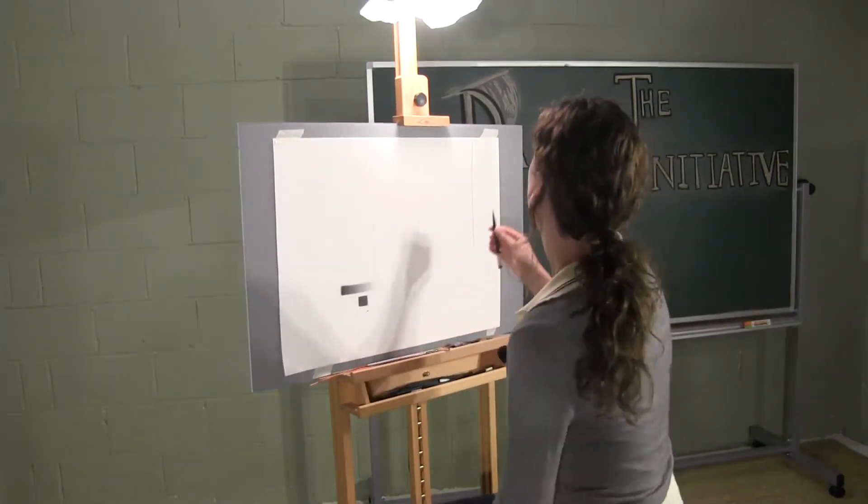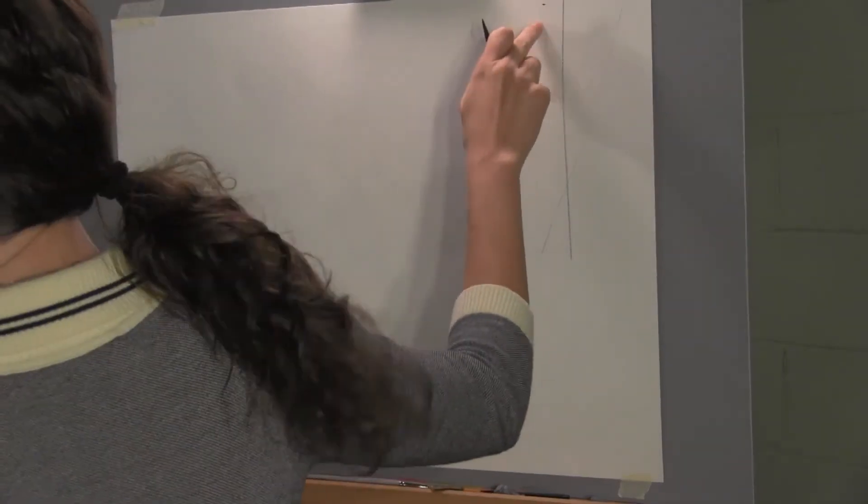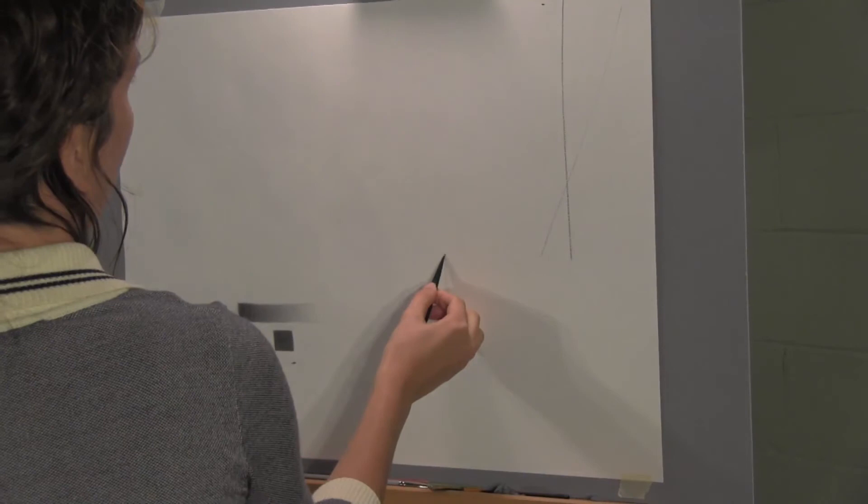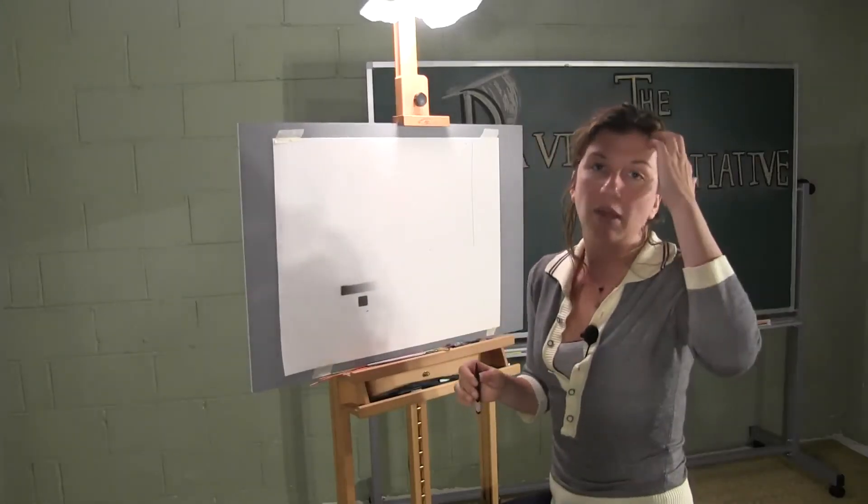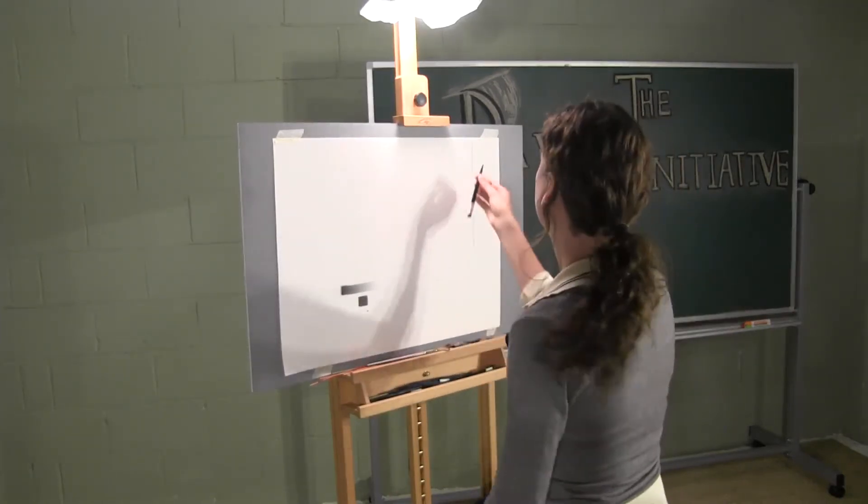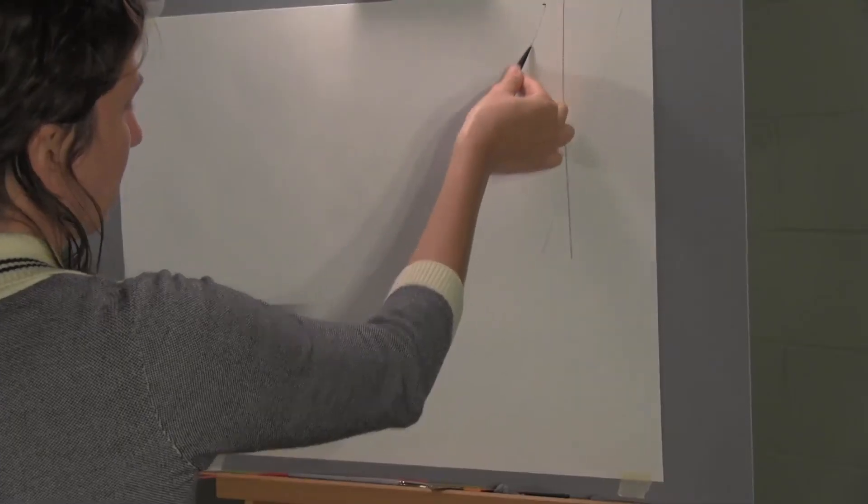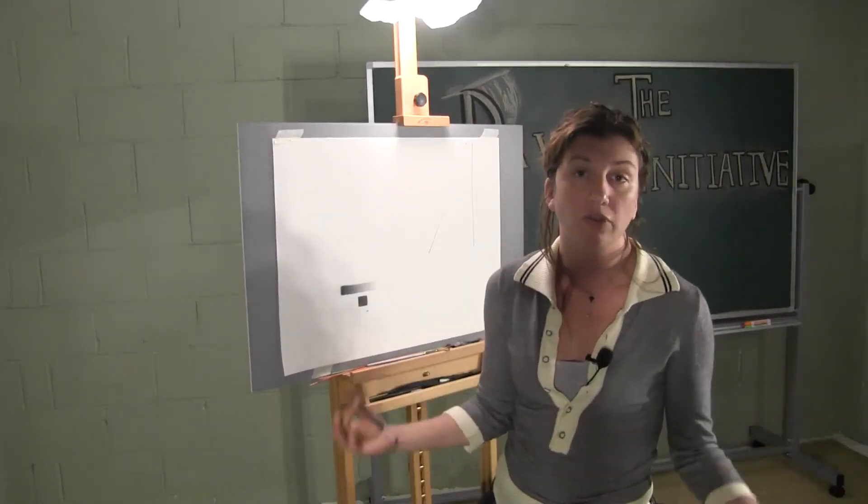For example, if I want to draw a line from this point here to this point here, what I want to do is make sure that I'm looking at the point that I'm going to. And that will help you draw a straight line.